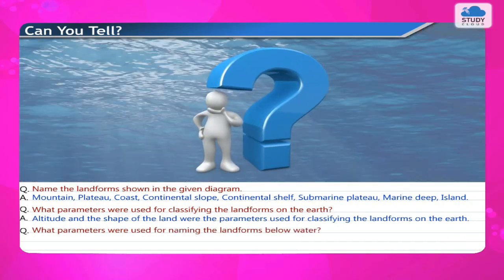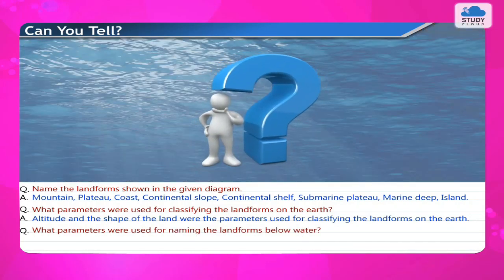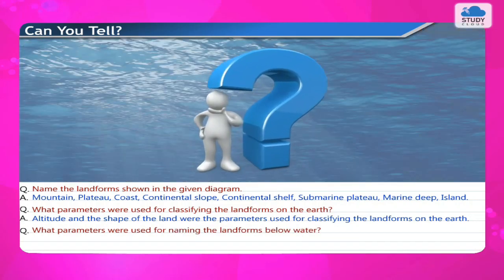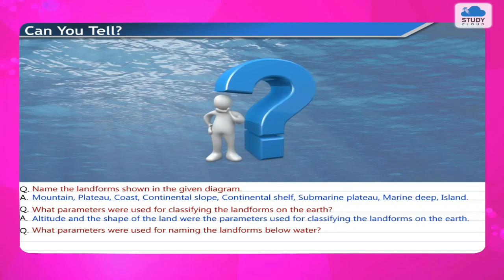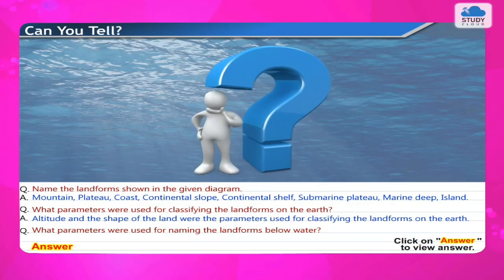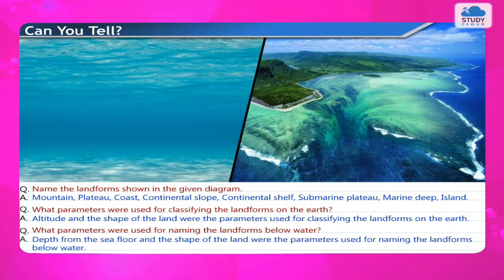The parameters used for naming the landforms below water are depth from the sea floor and the shape of the land.